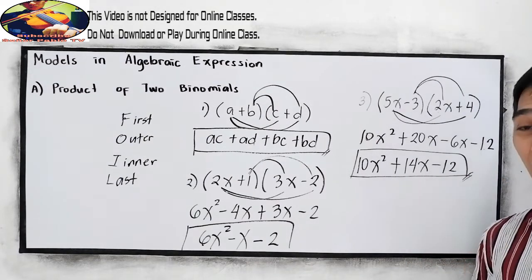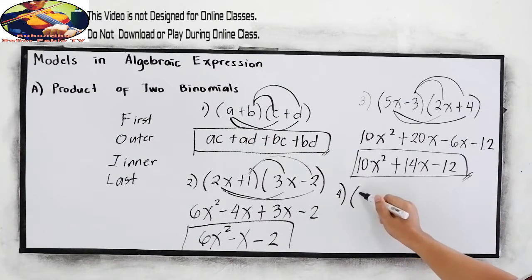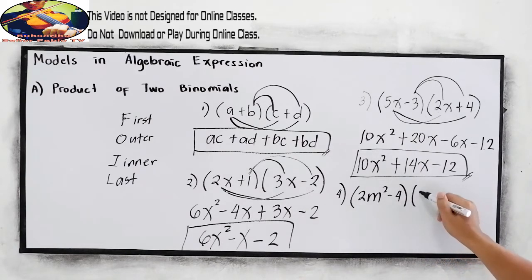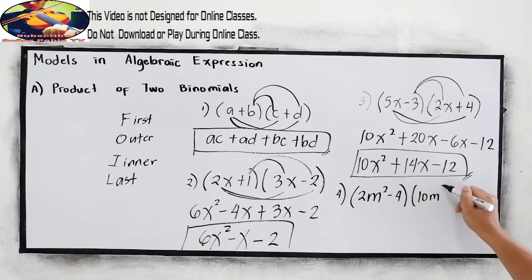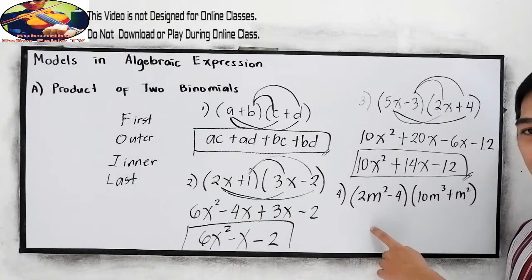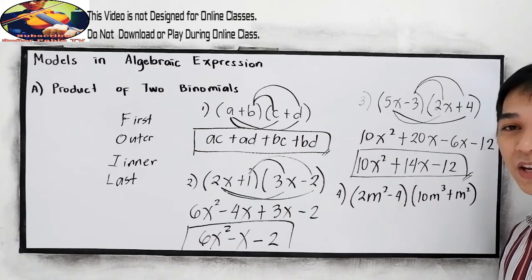Now our last example, number four. What if we have (2m² − 4) times (10m³ + m²)? If you want to try, pause the video, then after answering resume watching to check your answers.